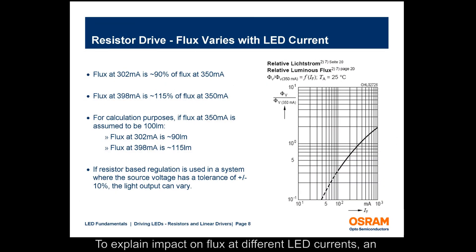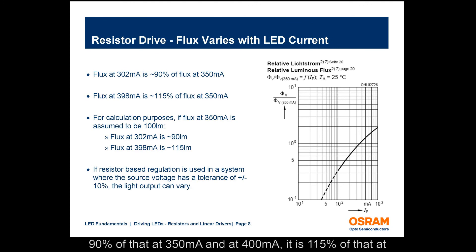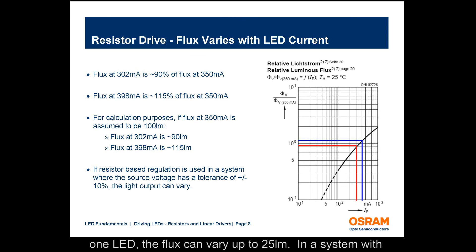To explain the impact on flux at different LED currents, an example is shown in this slide. Flux output at 300 milliamps is only 90% of that at 350 milliamps, and at 400 milliamps, it is 115% of that at 350 milliamps. The calculation of flux variation reveals that with just one LED, the flux can vary up to 25 lumens. In a system with multiple LEDs, the change in flux can be significant.